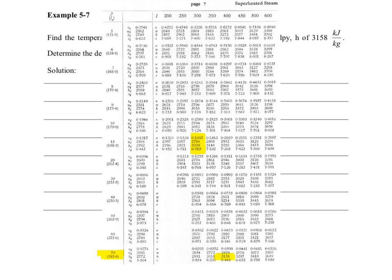We also know that at saturation conditions, the enthalpy is 2772, so clearly our steam is at superheated condition. We also know the saturation temperature in the brackets is 285.8.